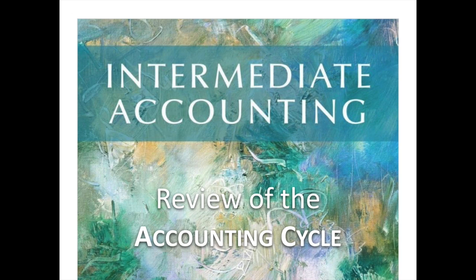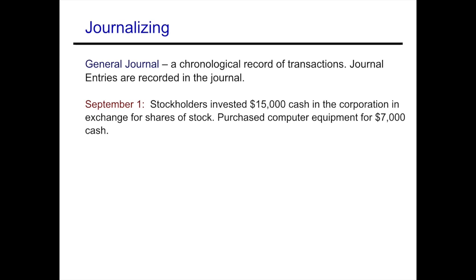In this video, continuing forward with the accounting cycle review, we're going to be focusing on journalizing and posting. Journalizing takes place in the journal, sometimes referred to as the general journal, which is a chronological record of all the transactions in the business.